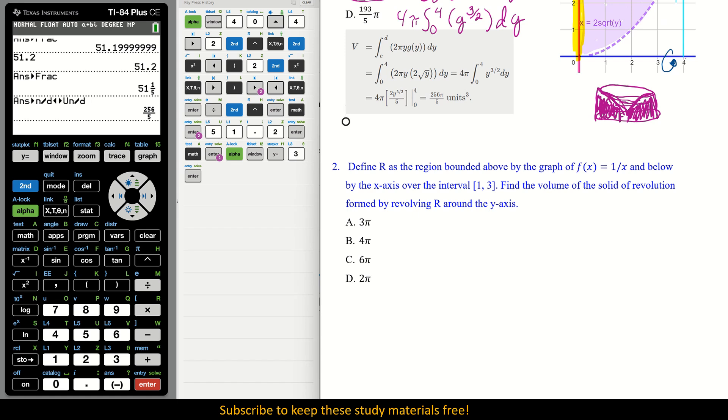Number 2. Define R as the region bounded above by the graph f of x equals 1 over x, and below by the x-axis over the interval 1 to 3. Find the volume of the solid of revolution formed by revolving R about the y-axis. So because we're revolving around the y-axis, we will enter everything in terms of x. It's kind of like an opposite game. We are doing integration from 1 to 3, and we have 2 pi x, then times 1 over x, then we have dx. And I want to enter that in the calculator as is.